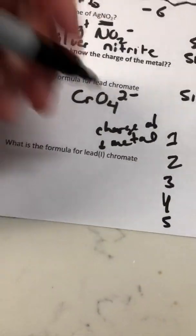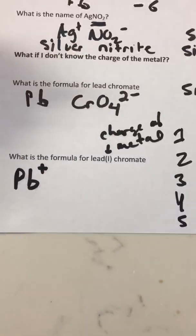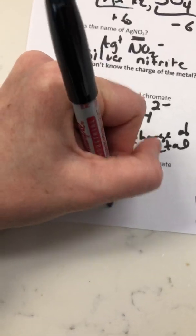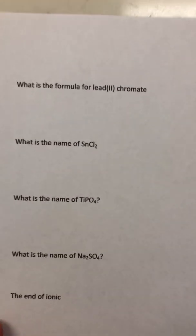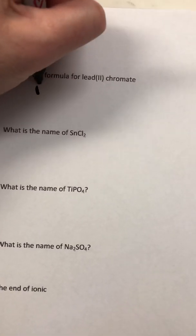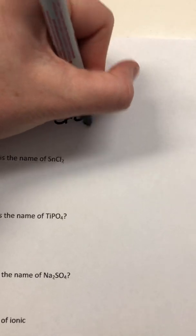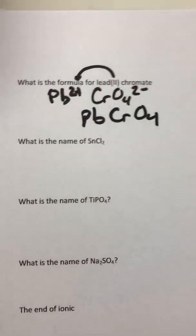Lead(I) means Pb has a plus one charge. Chromate is CrO4 2-minus. You have more negative charge than positive, so you need two leads to cancel — lead(I) chromate is Pb2(CrO4). Lead(II) chromate: Pb is 2-plus, chromate is CrO4 2-minus — you just need one of each. Lead(II) chromate is PbCrO4.